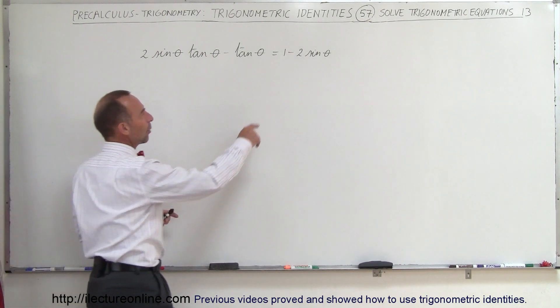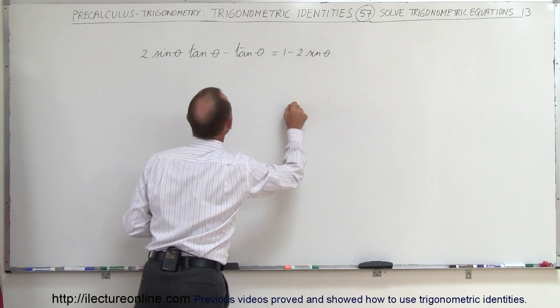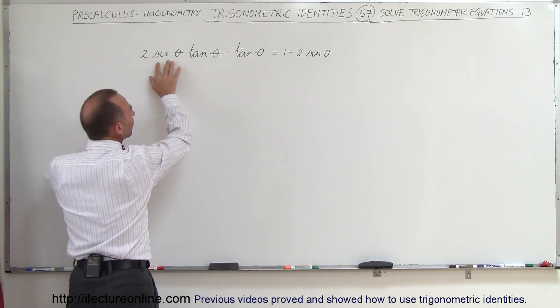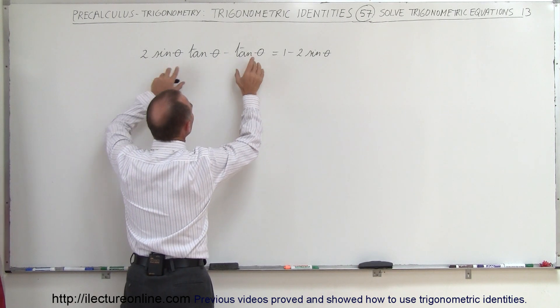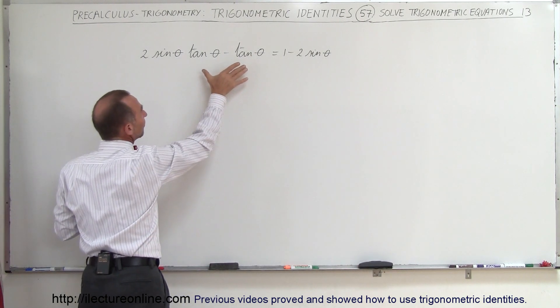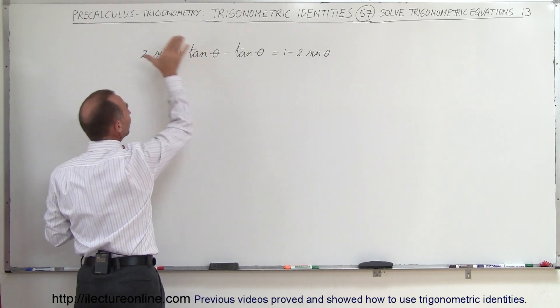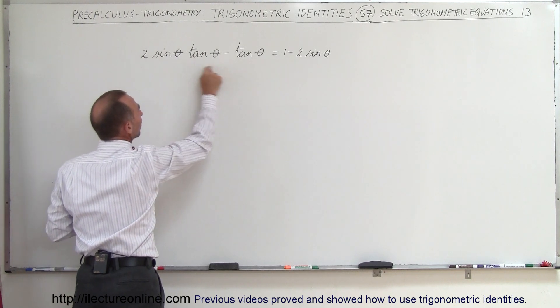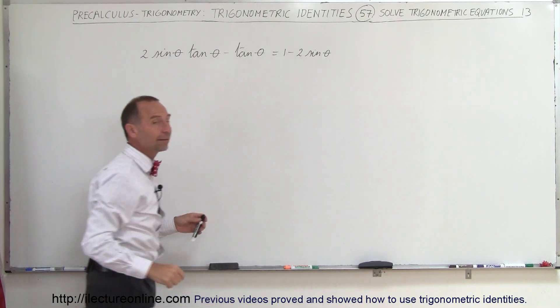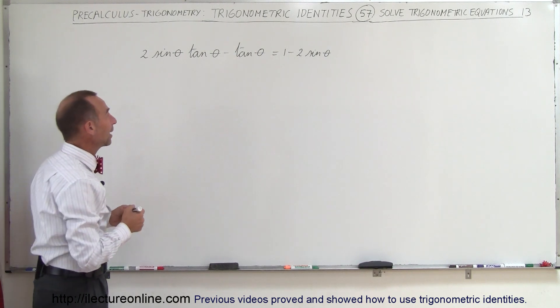I looked at the right side and I saw 1 minus 2 times the sine of theta. Here I see 2 times the sine of theta. Wait a minute, and all of a sudden I realized that if I factor out the tangent of theta on the left side, I end up with something that looks very similar to that. That's probably the key.